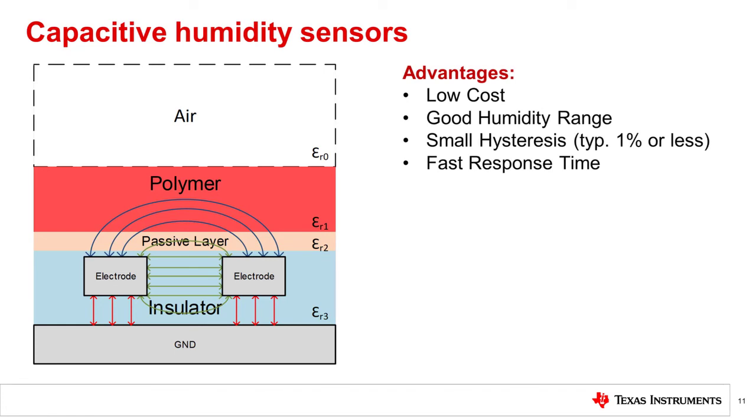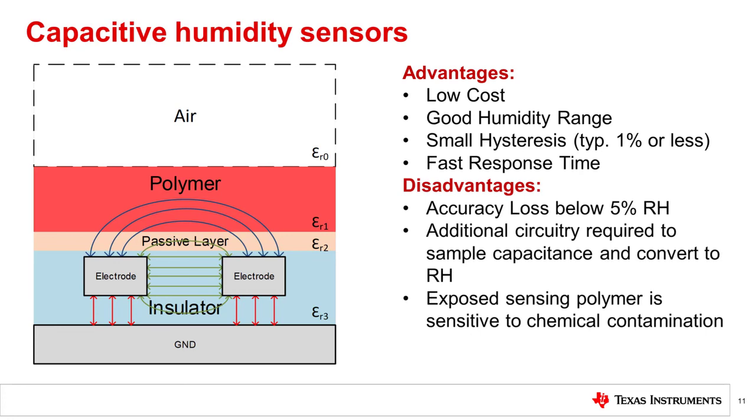In general, capacitive sensors are similarly low in cost to resistive humidity sensors. They have good functional humidity range from 0 to 100% and very small hysteresis, typically 1% or below. They also provide a very fast response time to steep changes in humidity. Among the drawbacks of these sensors is that they typically have poor accuracy below 5% RH and require additional complex circuitry and characterization to sample capacitance and convert it back to relative humidity. Additionally, due to the opening of the top of the package, these sensor types are sensitive to exposure to chemicals and require special consideration in manufacturing.